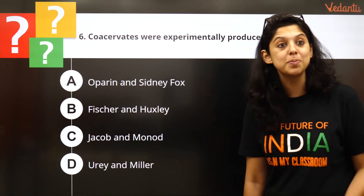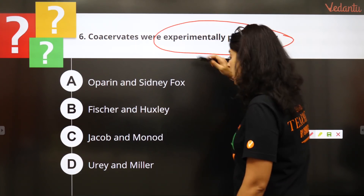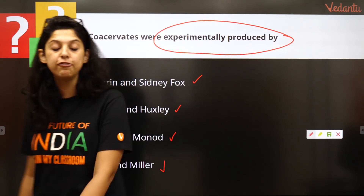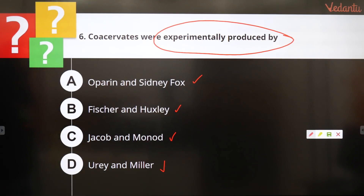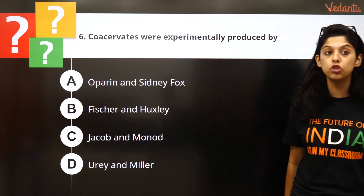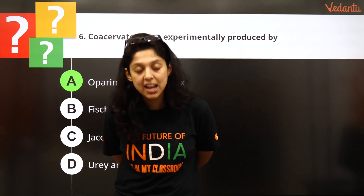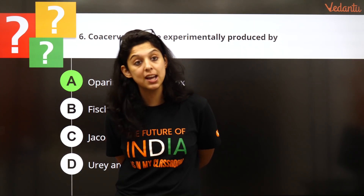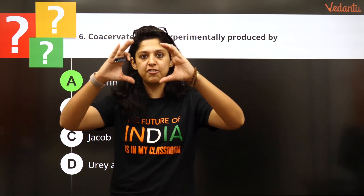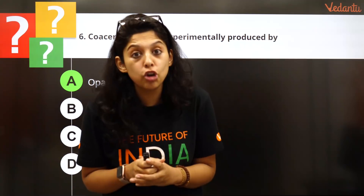Coacervates and protobionts — we have taken an amazing class on this. Coacervates were experimentally produced by which scientist? The options are Urey-Miller, Jacob-Monod, Fischer-Huxley, or Oparin and Sydney Fox. Oparin and Sydney Fox experimentally produced coacervates. The most interesting thing about coacervates is that they have a bilayer of lipids on the outside, which causes isolation of the internal medium, allowing it to divide. Because lipids are very sticky, the ability of the cell to divide is present.